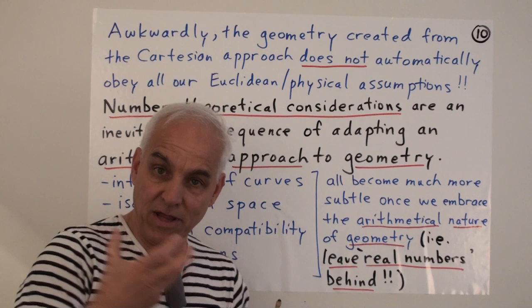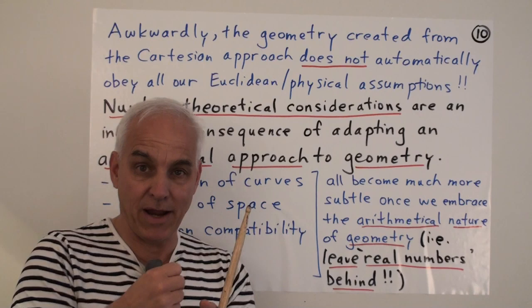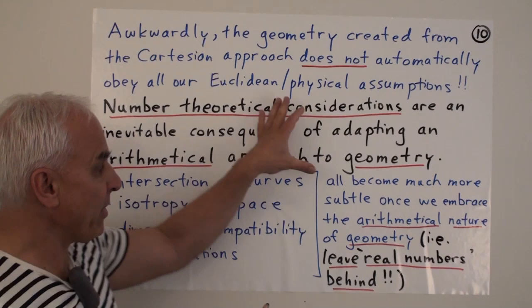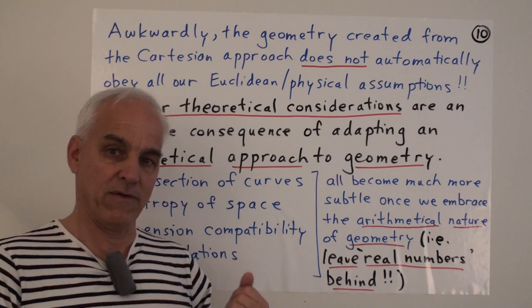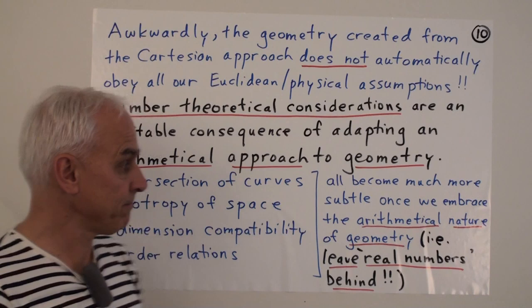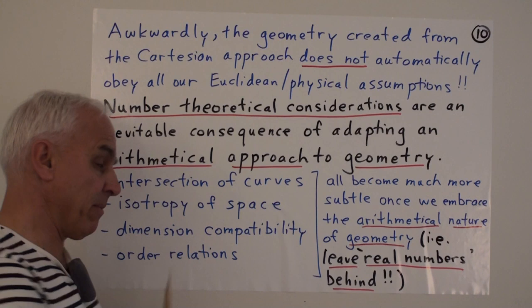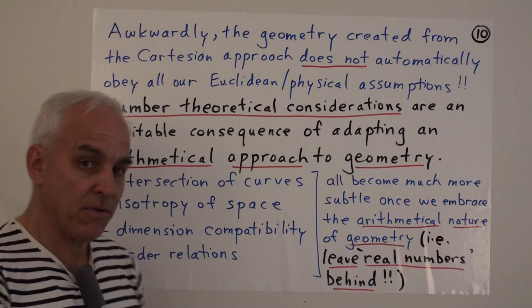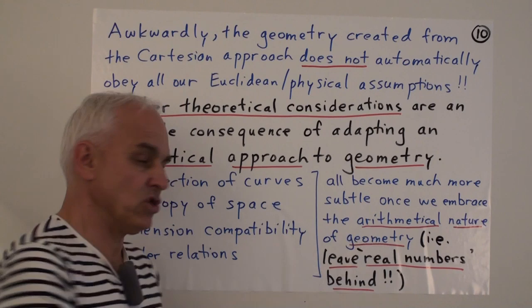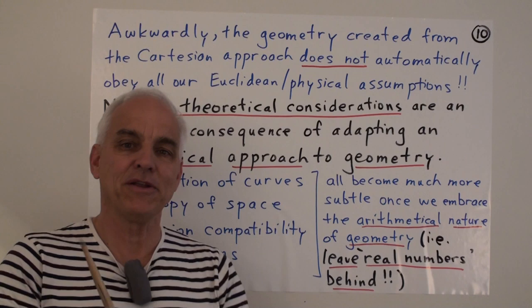We're saying, let's suppose we have an arithmetical system, some kind of field, like the rational numbers. Or if you're a wishful dreamer, like the real numbers. Then we use that field, that number system, to create the geometrical objects. To create points via ordered pairs. To create lines via equations, linear. To create circles via quadratic equations, and so on. With the coefficients taken from the field that we're working with. So the geometry becomes subservient to the arithmetic. And therefore, number theoretical aspects of the arithmetic in this field we're working with, necessarily become completely intertwined with geometrical considerations. So, some examples. Intersections of curves. The isotropy of space. This dimension compatibility that we talked about. Order relations. All of these, and other things as well, become much more subtle once we embrace the arithmetical nature of geometry.